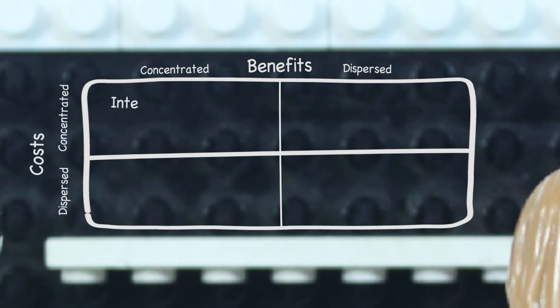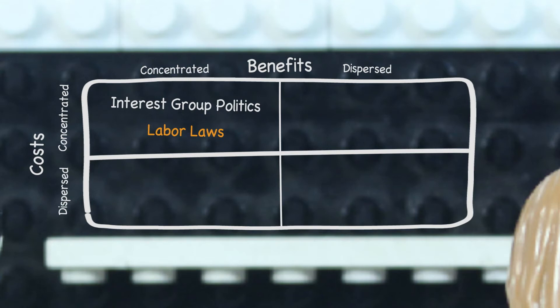When the benefits and costs are both concentrated, we have interest group politics because both sides will mobilize to advocate for their interests — basically, the interest groups will fight it out. Labor laws, at least in some cases, could be an example of this, with business and unions opposing each other.